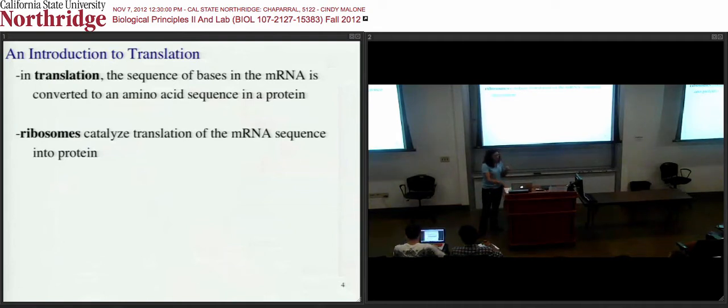Okay, so in translation, it's a sequence of bases in the mRNA—that piece that we saw was an mRNA—where it controls the sequence of amino acids. And we control the sequence of amino acids based on that ribosome and then complementary base pairing between the mRNA and a tRNA that's carrying amino acids.